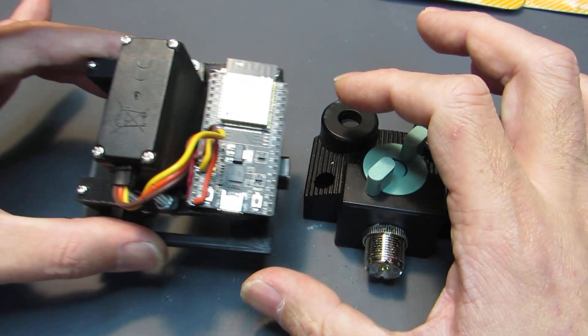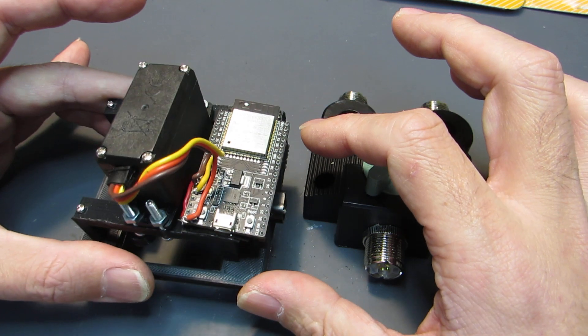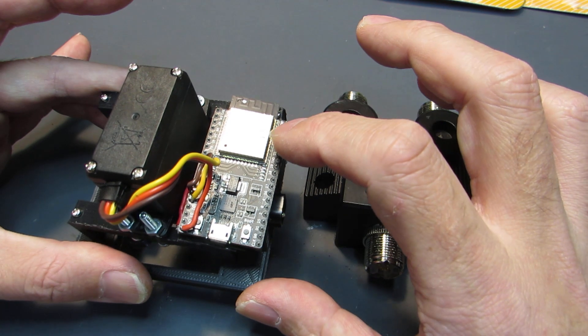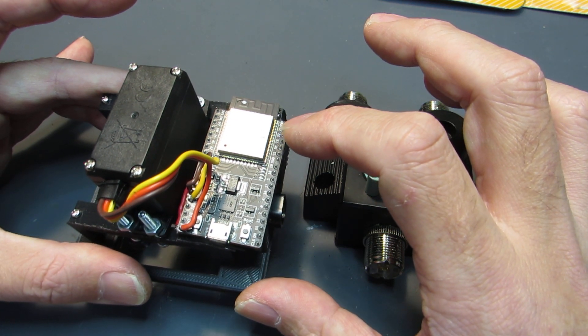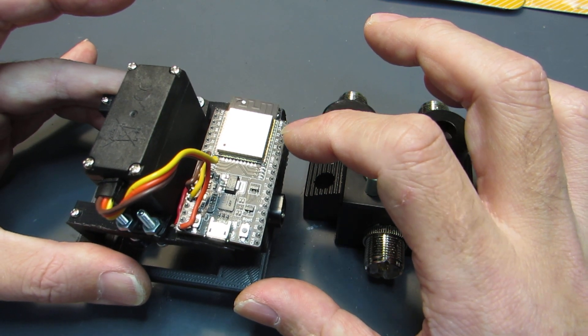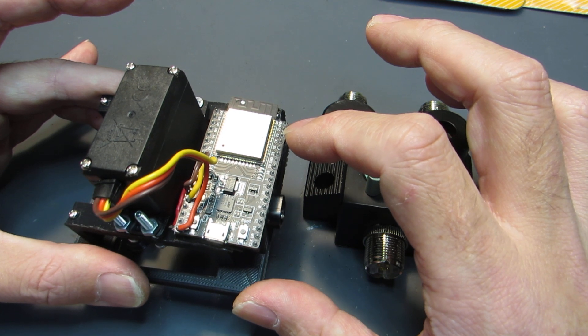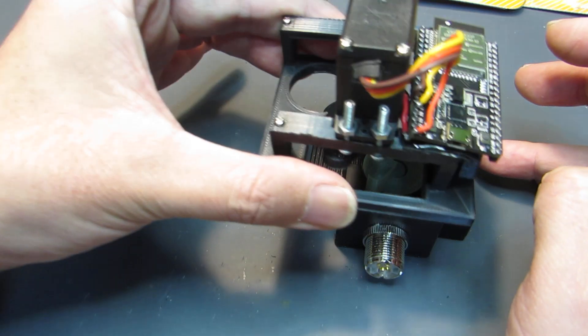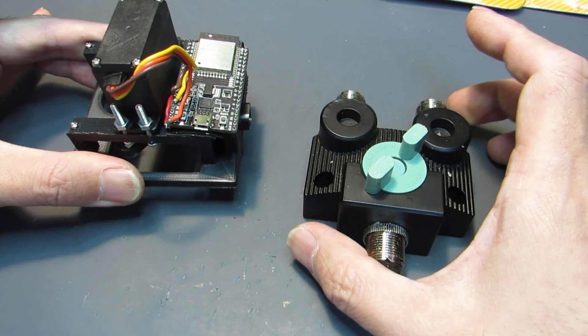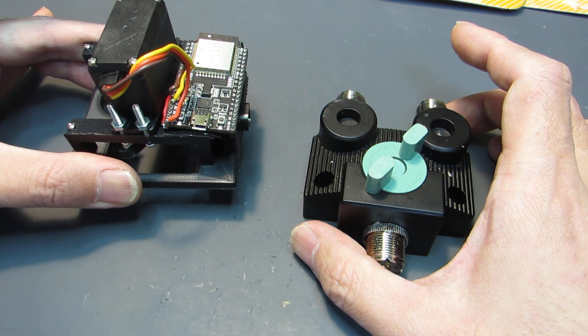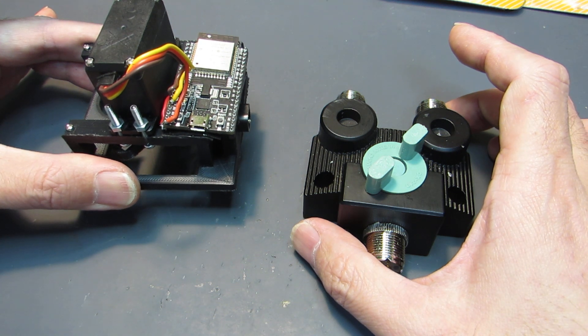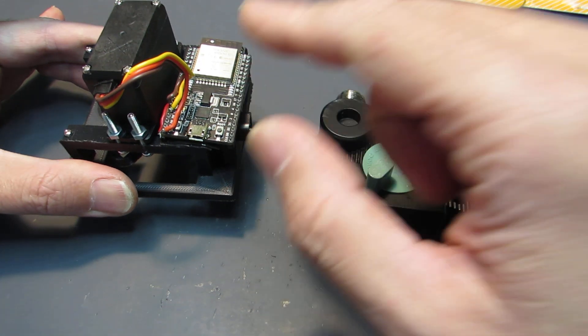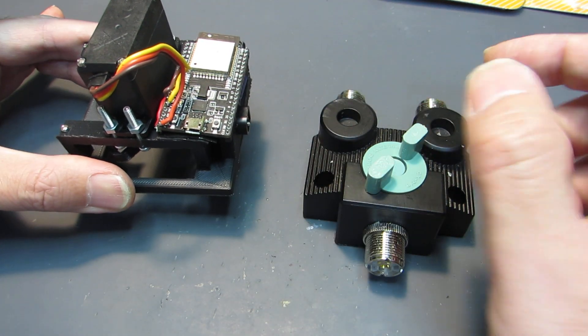I will write the firmware for operating as an access point mode of the ESP32. That means we don't need an established WiFi network. Just put this switch near the antenna, and we can directly access this port and switch as we wish.